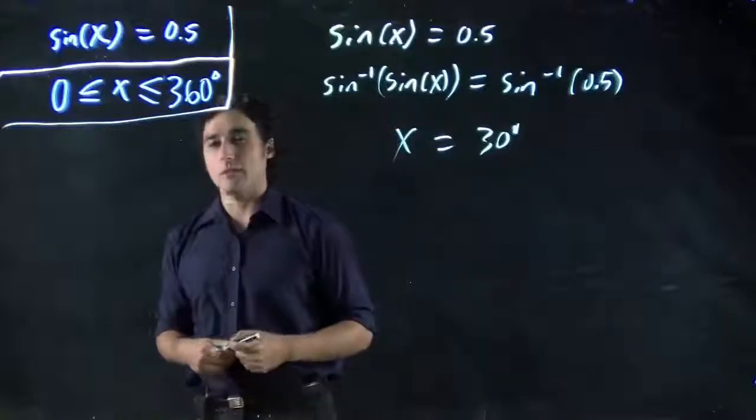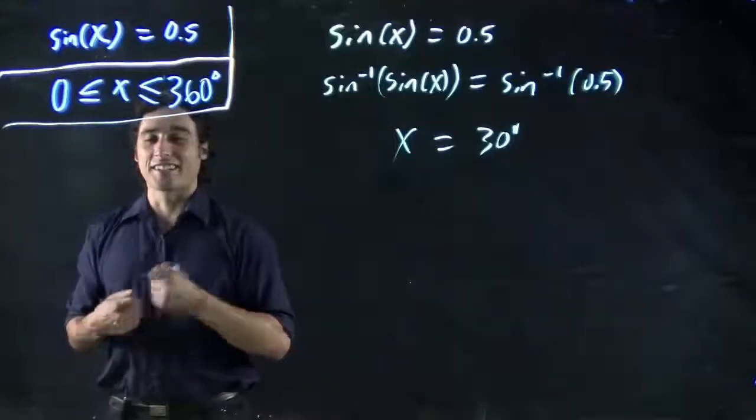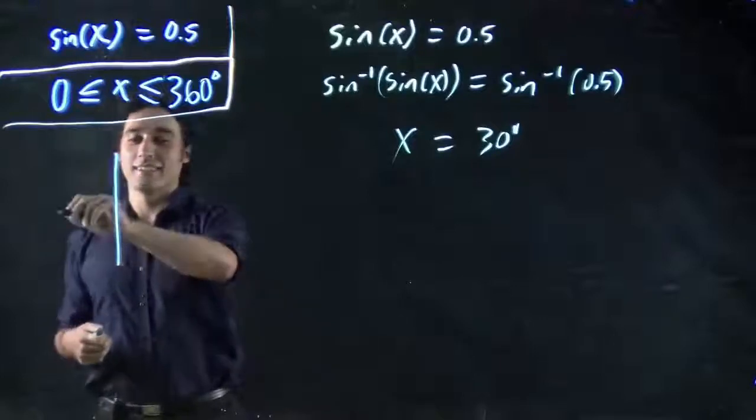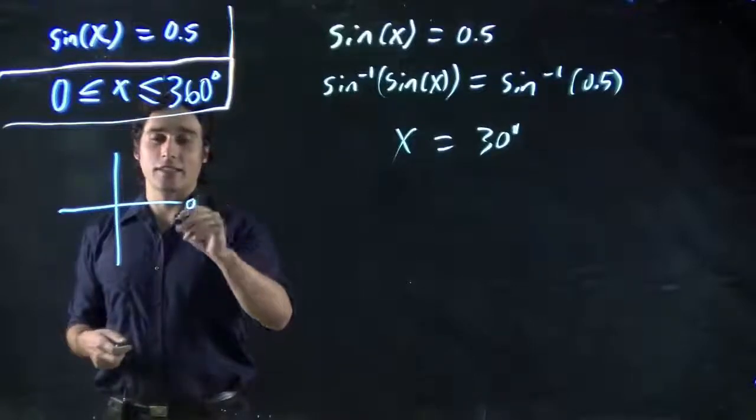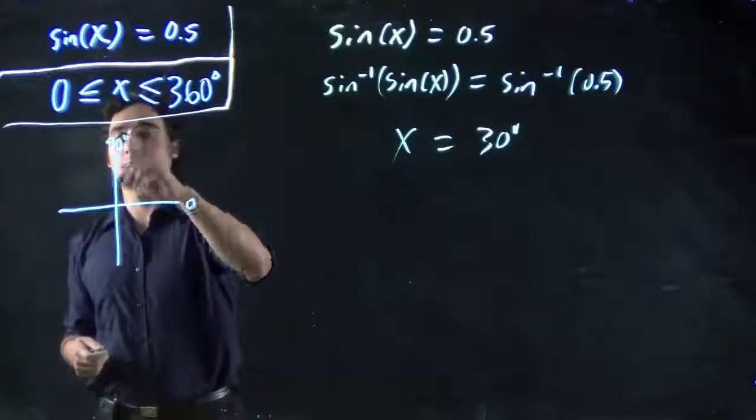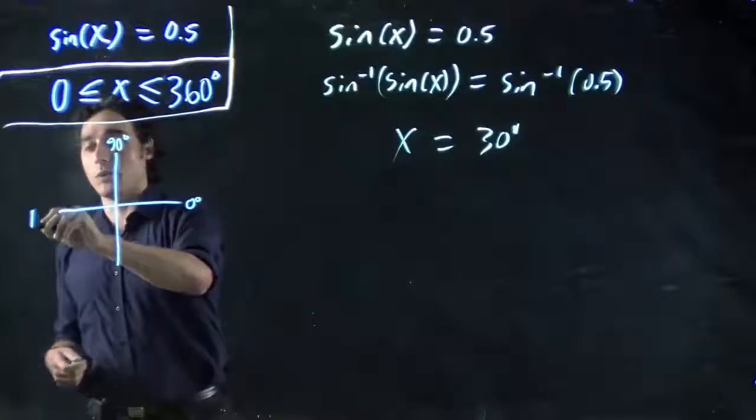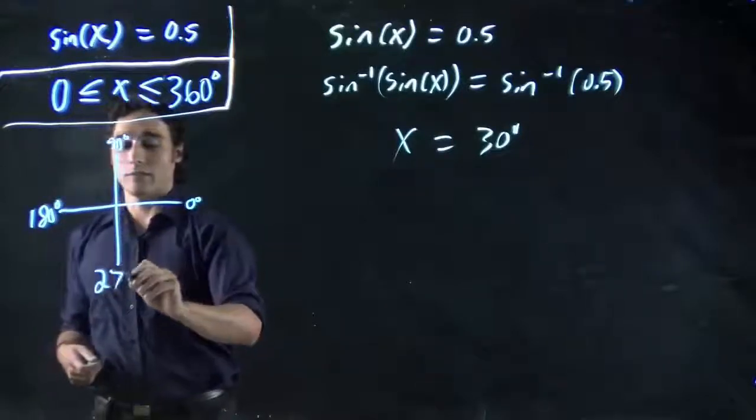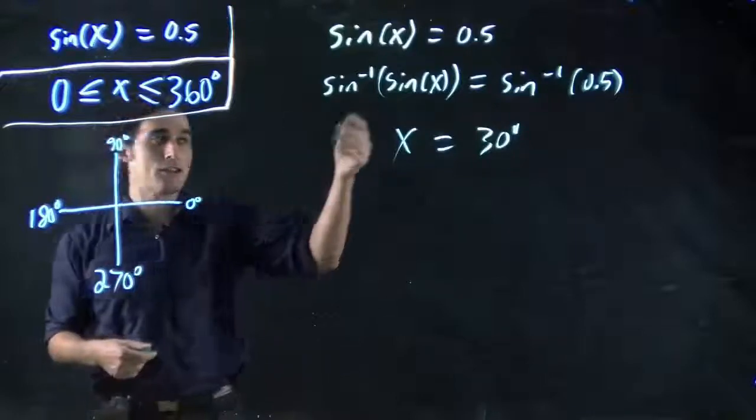Well, it helps if we consider the unit circle. So what do we got? If we start at 0, then we go up to 90 degrees. Then 180 degrees. And 270.